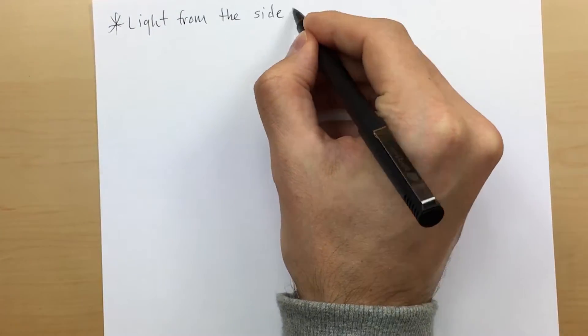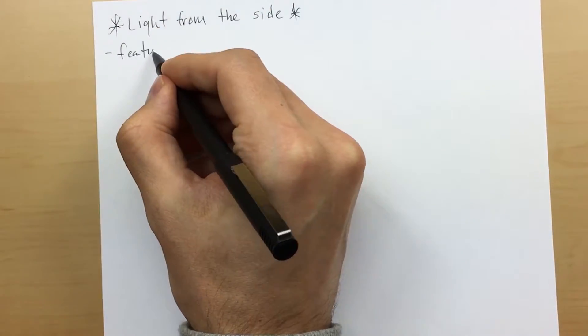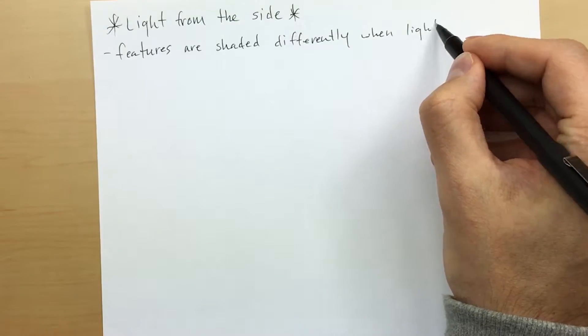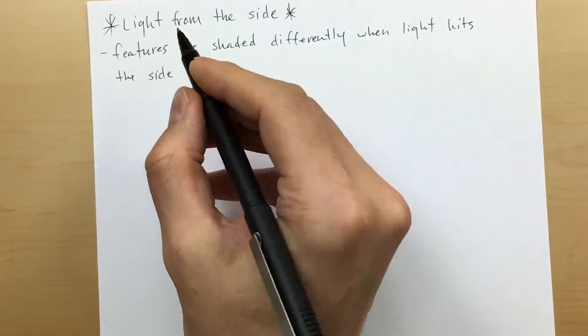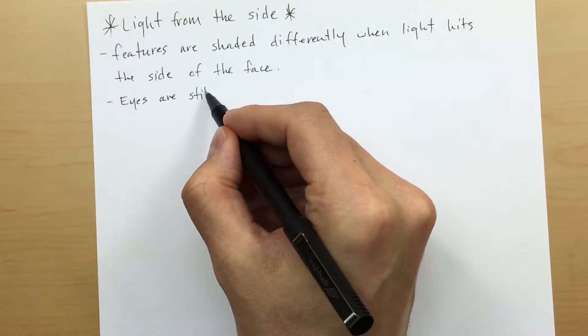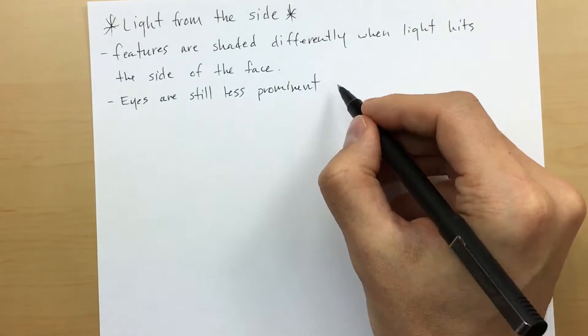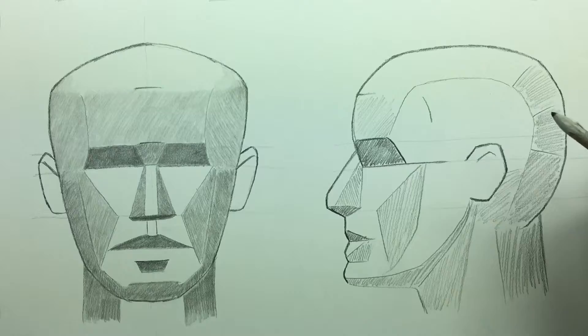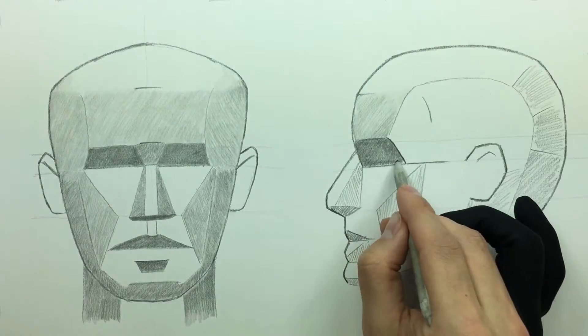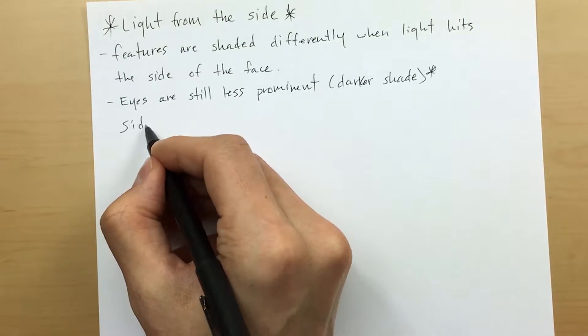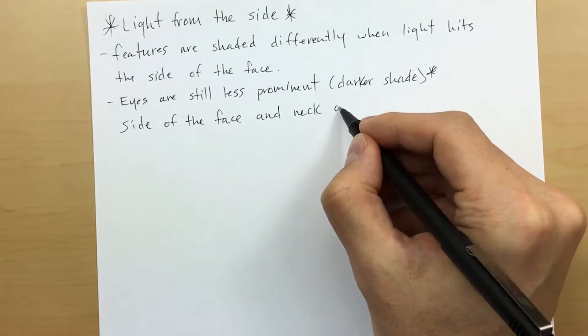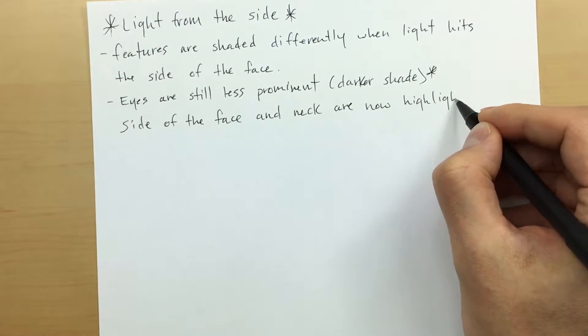Now we're going to be moving on to the second view. This is going to be light from the side. Now the features in this view are going to be shaded differently when light hits the side of the face, so be sure to pay attention. Now the eyes are still going to be less prominent in this view, and because of that they are going to remain having that darker shade. Now the big changes are going to be that the side of the face and the neck are highlighted. Before in the first view they weren't, but in this view they are.